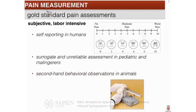How is pain assessed in the clinic? The gold standard is one form of caricature called the visual analog scale, which I will refer to as the VAS. The subject is asked to point at one of these caricatures on a scale of 0 to 10, self-reporting. In pediatric populations and patients who aren't able to communicate, that's not possible, so the healthcare professional relies on surrogate markers. In research using animal models, the researcher relies on secondhand behavioral observations, which are mostly reflex behaviors. In general, the methods to assess pain in the clinic and lab are subjective and labor intensive.